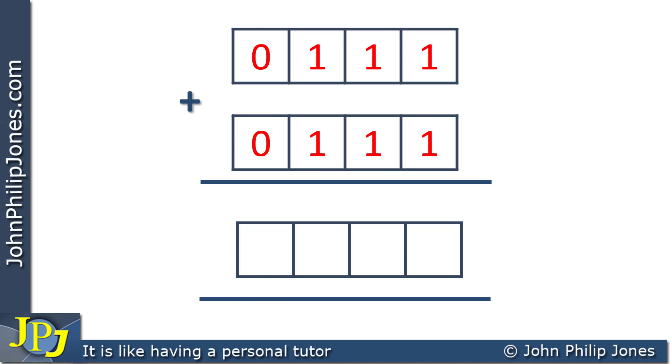We perform the addition one column at a time. We add these two 1s first, and 1 plus 1 is 2. In binary, 2 is 1, 0, so we put the 0 down here and carry the 1 to the next column. We then perform the addition on the next column, taking into account the carry. When we add 1 plus 1 plus 1, we get 3. Of course, 3 in binary is 1, 1, so we place down a 1 and carry the other 1.